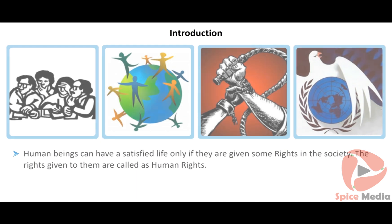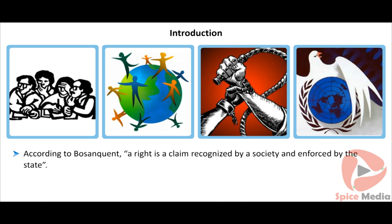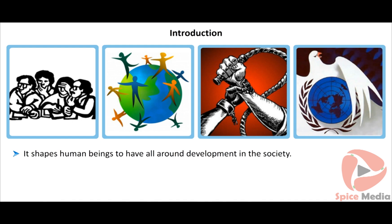Human beings can have a satisfied life only if they are given some rights in the society. The rights given to them are called human rights. According to Boson Kent, a right is a claim recognized by a society and enforced by the state. It shapes human beings to have all-round development in the society.